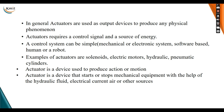For doing this, actuators require a control signal and a source of energy. The control signal can be anything — a mechanical system, electronic system, or software-based system. It can be a human or a robot — anything can be a control system. The source of energy can be mechanical energy, hydraulic fluid, electric current, or air. Basically, an actuator requires a control signal and a source of energy.